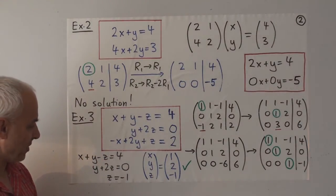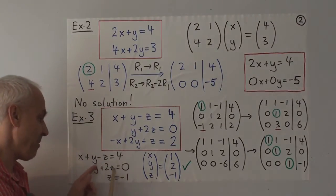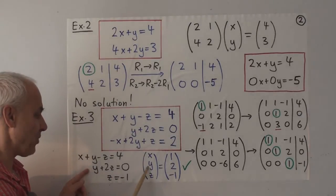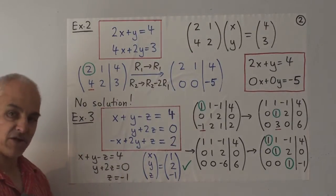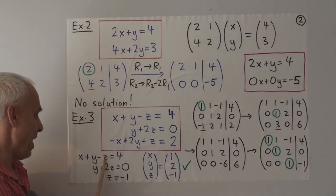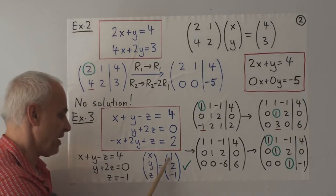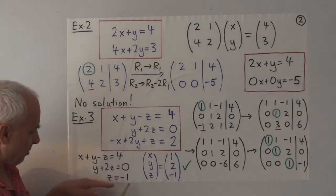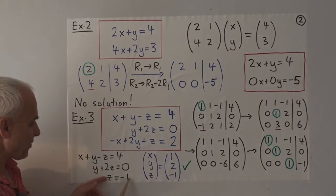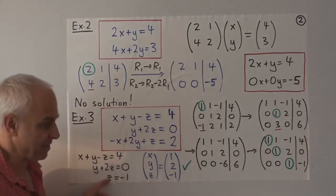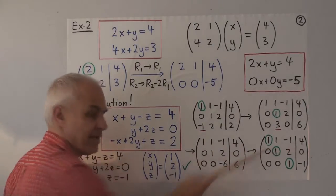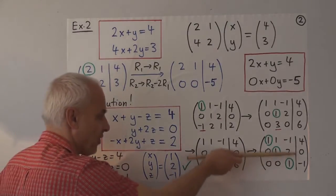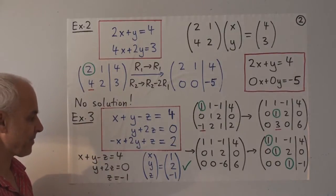We can read off the solutions starting from the bottom equation: z equals minus one. Plugging into the second equation, y minus two equals zero, so y equals two. Then plugging both into the first equation: x plus two minus minus one equals four, giving x equals one. This process is called back substitution — we start with the bottom variable, evaluate it, then use it to find the next variable up, and so on successively.